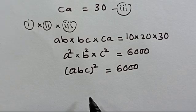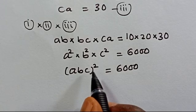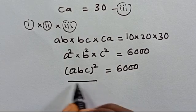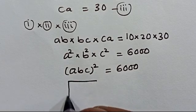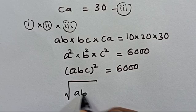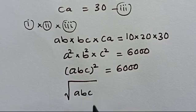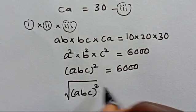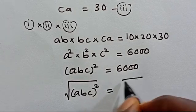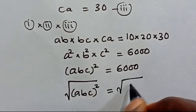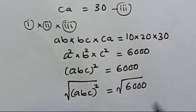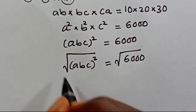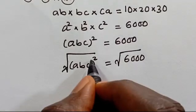So from here we have (abc) squared equals 6,000. We want to eliminate this power of 2, so we take the square root of both sides: abc equals the square root of 6,000.